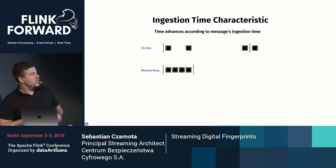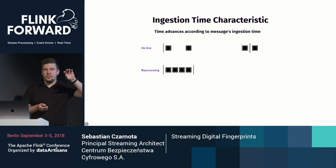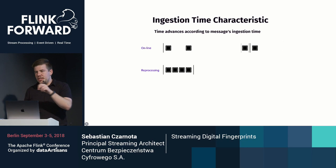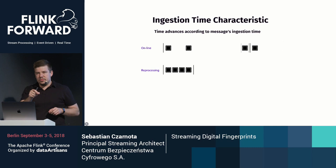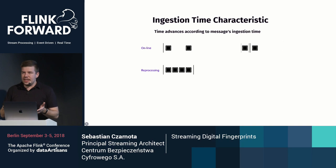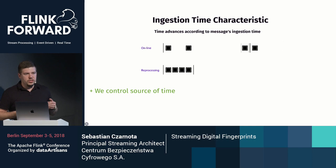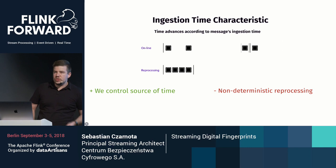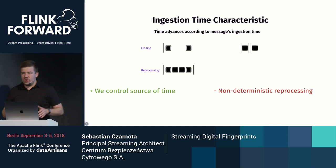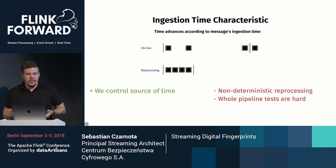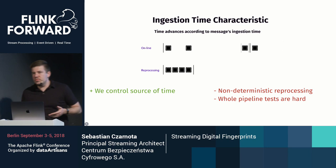Another approach is ingestion time characteristics. It takes not the event time from when the event occurred in the user system, but the time when a message reaches the Flink application. There is an automatic assignment of the timestamp, and Flink then uses processing as if it were event time processing. We control the source of time, which is good. However, we still get non-deterministic reprocessing, because when we load all our data from the data lake and messages are cramped together, it's the same situation as processing time. And whole pipeline tests are also hard because of this processing time impact.